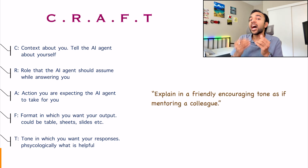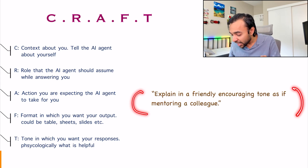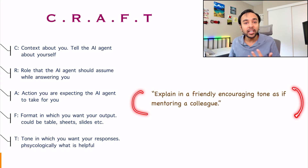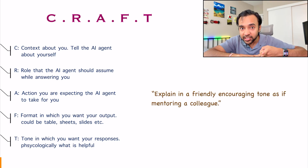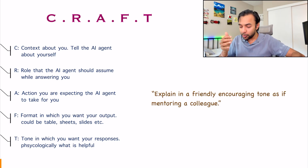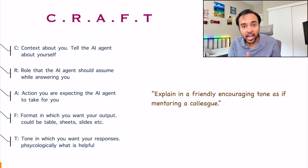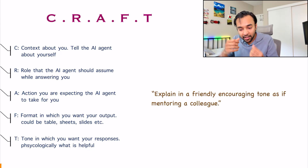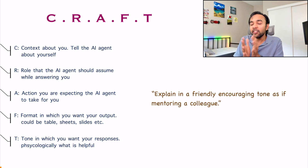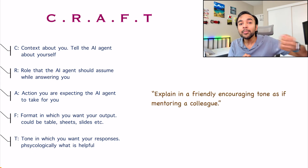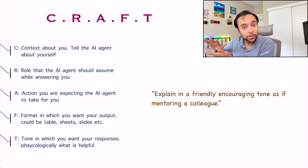The last part is T, or Tone — how you want the AI model to behave with you. I am telling it: 'Explain in a friendly, encouraging tone as if you're mentoring a colleague.' Because once the AI has assumed a role, that role can vary — a senior member can be very strict or very encouraging. You have to tell your AI model how to behave because some people thrive under pressure and some don't. You can even tell it: 'Give me hints but do not give me the direct answer — I want to work out the solution myself.' That makes all of the difference.